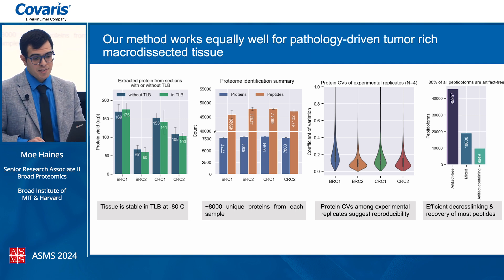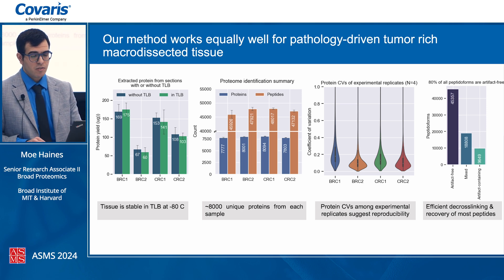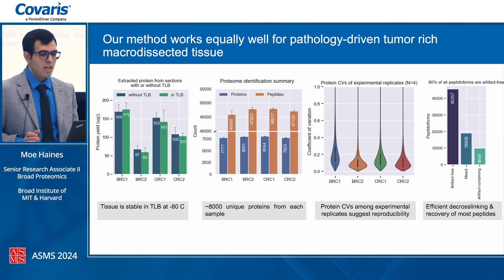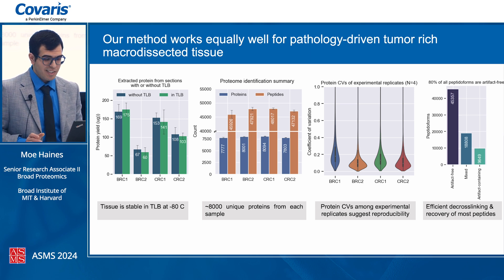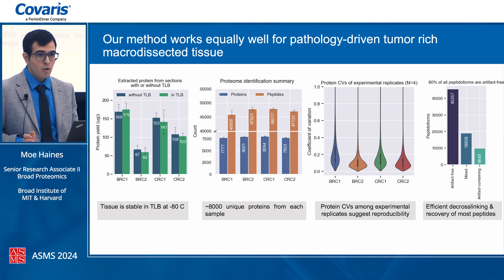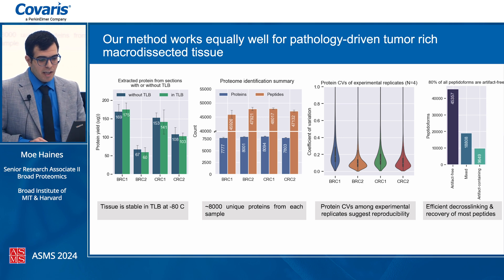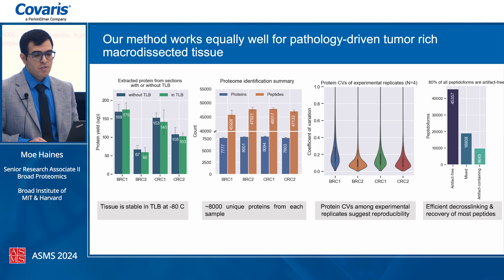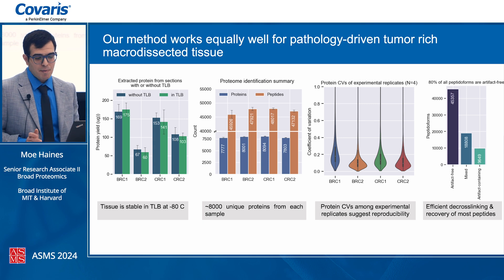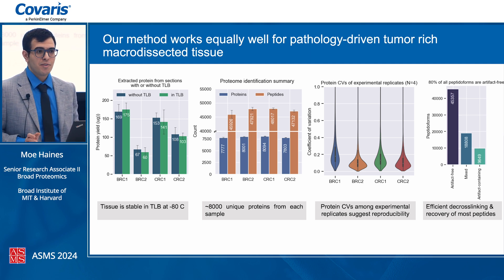To stress test cross-linking efficiency, we pooled a sample representing all the blocks we worked with, fractionated it into five samples, ran DDA, and performed a PTM discovery open search in FragPipe to look for all potential peptide forms. Based on results, we're recovering 80% of all peptide forms, which is pretty good for 20-year-old samples. Of these, 20,000 peptide forms were observed in both modified and unmodified states, while uniquely modified ones make up only 9,000 overall, including FFPE mods.